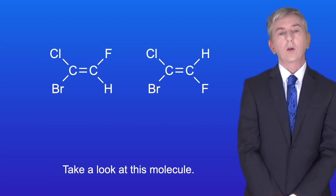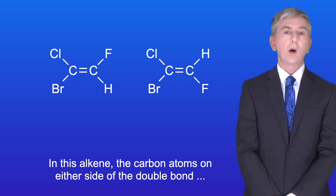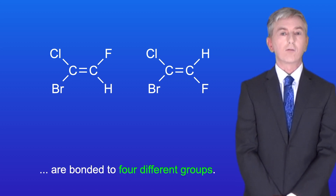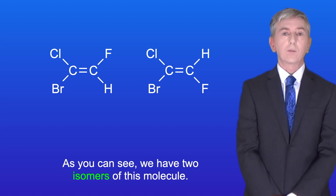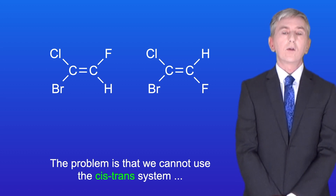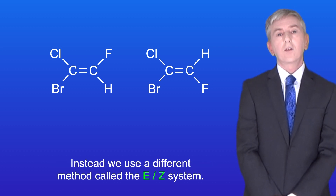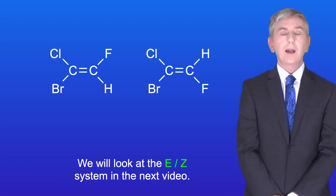Take a look at this molecule. In this alkene the carbon atoms on either side of the double bond are bonded to four different groups, and as you can see we have two isomers of this molecule. The problem is that we cannot use the cis-trans system for naming these isomers, so instead we use a different method called the EZ system, which we look at in the next video.